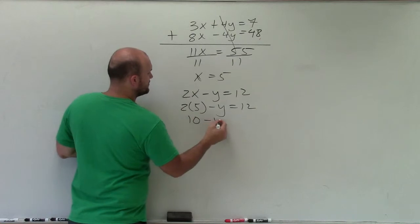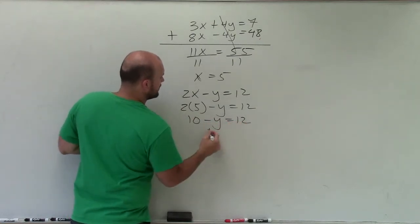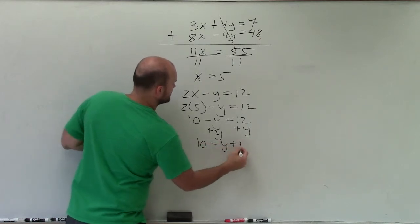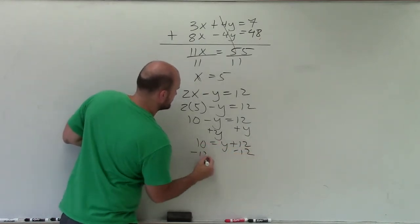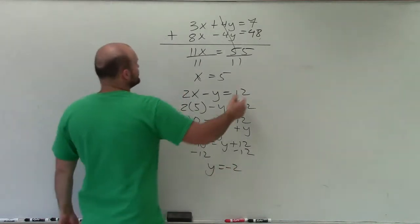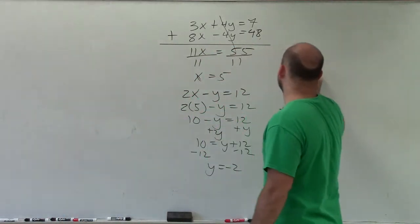2 times 5 is equal to 10 minus y equals 12. I'll add the y to both sides. 10 equals y plus 12, subtract the 12, y equals negative 2. So therefore, my solution set is going to be 5 comma negative 2.